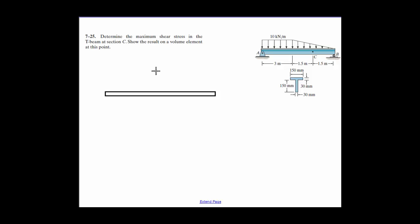The force at A is going up, and the force at B is going up like this. We make this the force of A in the Y, and this is the force of B in the Y. There's no horizontal load, so you can put it in if you want, but this will be 0 — this could be F-A-X.